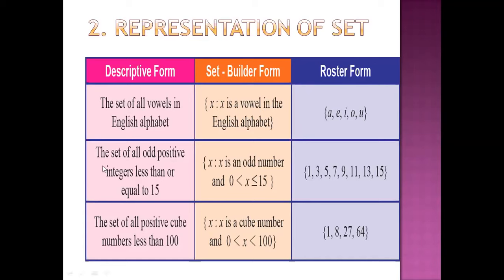In the second example: the set of all odd positive integers less than or equal to 15. Set builder form will be represented as X such that X is an odd number. We have specified X is an odd number. Because odd numbers are infinite, we will have to consider only integers that are less than or equal to 15, so we give the condition: X greater than 0 and less than or equal to 15.